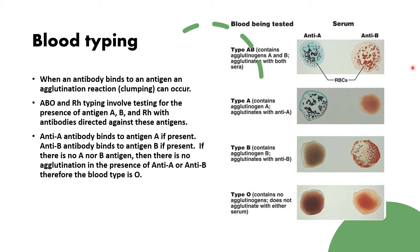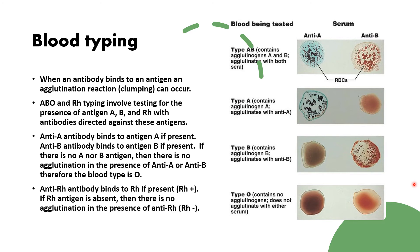The antibodies are used by the lab to test for blood types. Type AB is tested with both anti-A and anti-B antibodies and shows agglutination in both. Type A shows agglutination only with anti-A but not anti-B. Type B shows agglutination only with anti-B but not anti-A. Type O shows no agglutination with either. For Rh, if the Rh antigen is present, anti-Rh antibody will bind and cause agglutination; if absent, there is no agglutination.